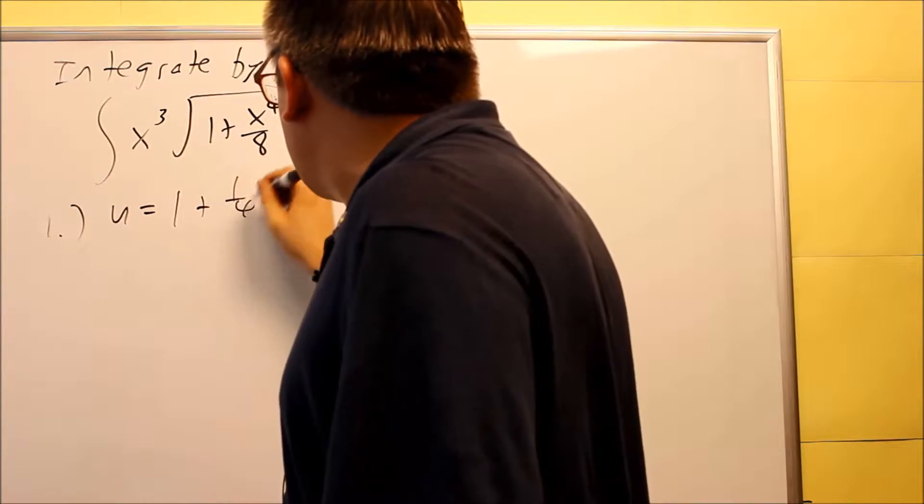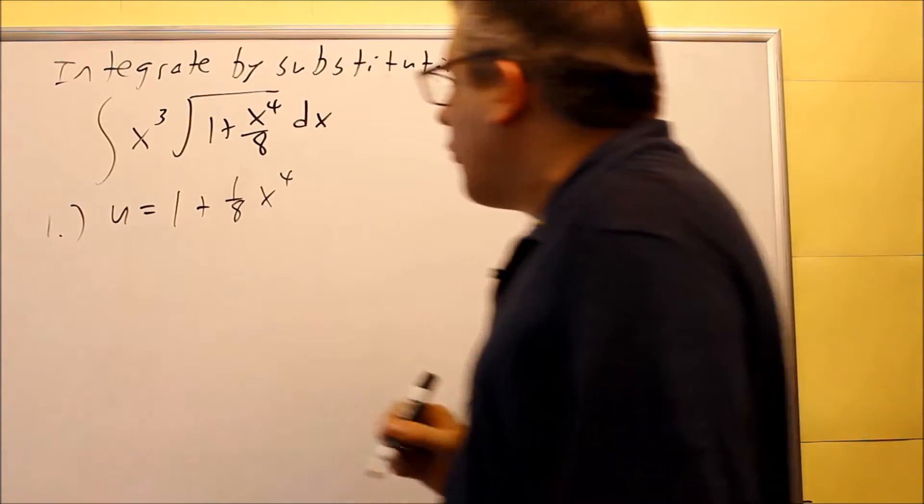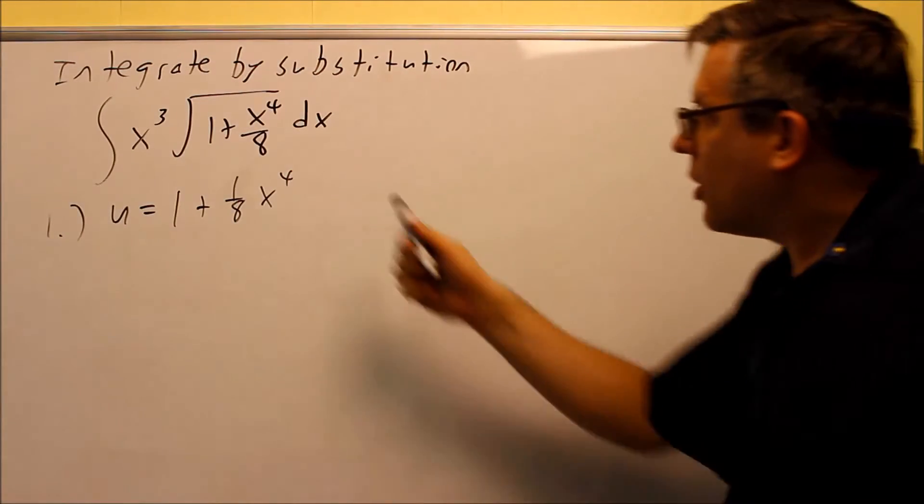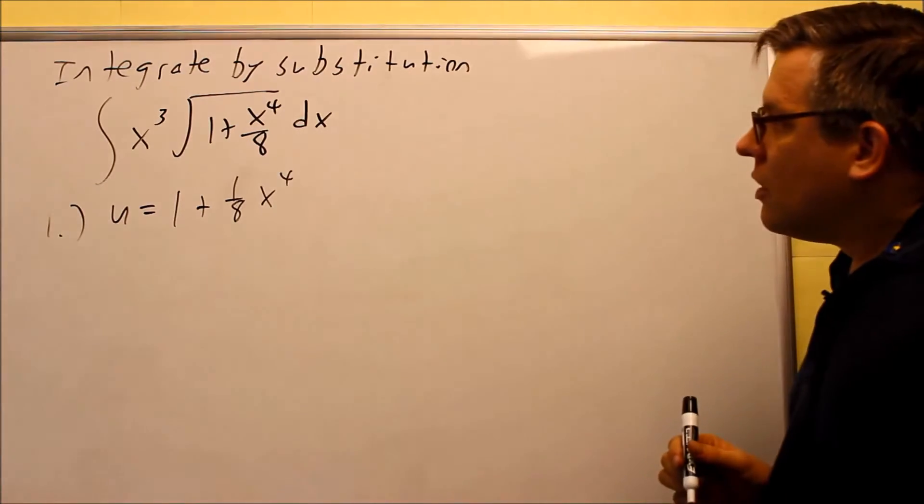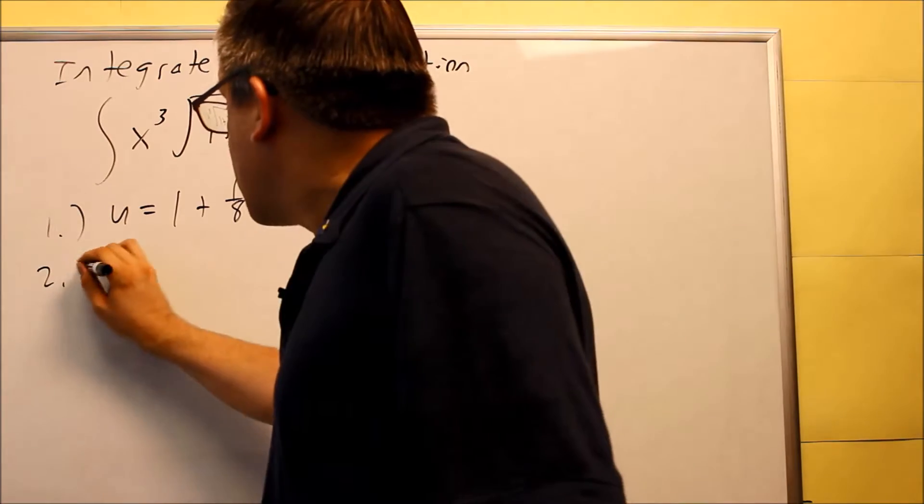So I'm going to pick this one. Now I'm going to purposely write this as one plus one-eighth x to the fourth power, so that's what I'll call u, the part on the inside here. And I'm writing it in this form to make it easier to do the derivative, which we're going to do in step number 2.